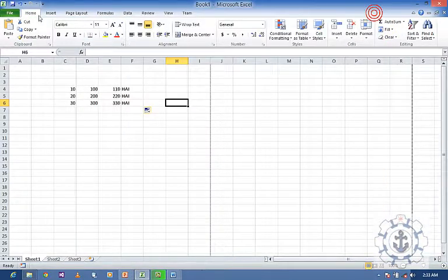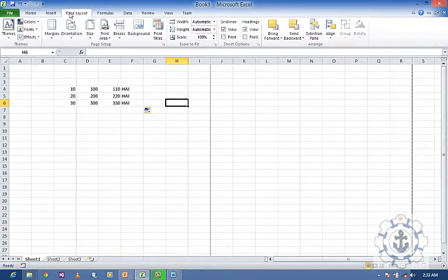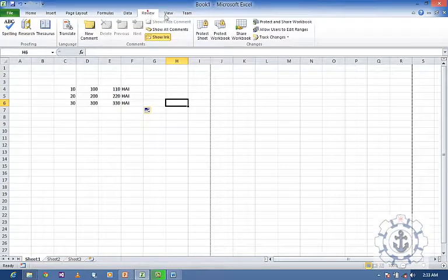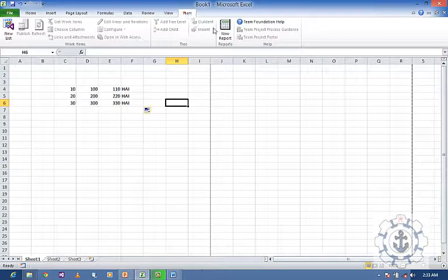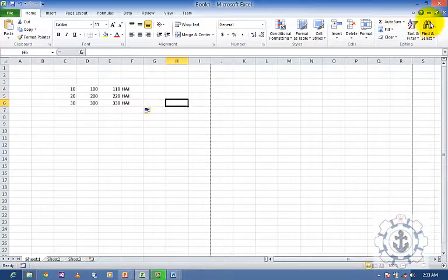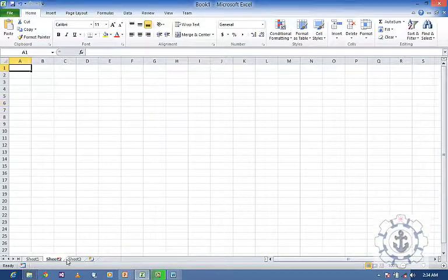We'll be having tabs like Home (by default Home tab is active), Insert, Page Layout, Formulas, Data, Review, View and Team. This is called the ribbon where we can minimize or maximize it. This is called the title bar where the default name will be Book1, and all worksheets will be having three sheets.